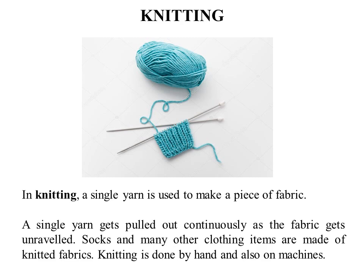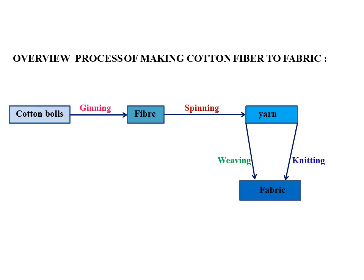In knitting, a single yarn is used and it gets pulled out continuously as the fabric gets unraveled. Some examples of knitted fabrics include socks, sweaters, and many other clothing items. When you pull one end, it will open out the whole fabric. Knitting is also done by hand as well as on machines.